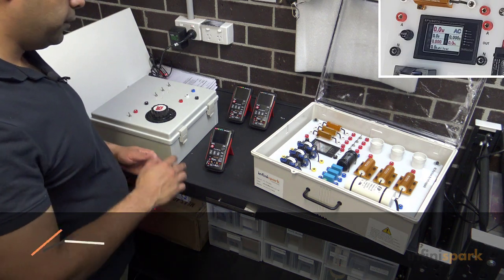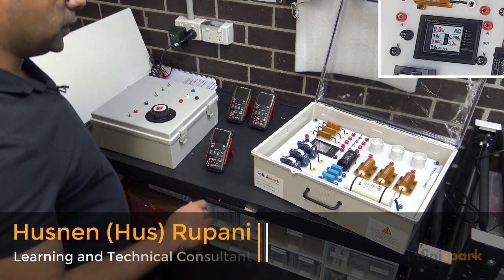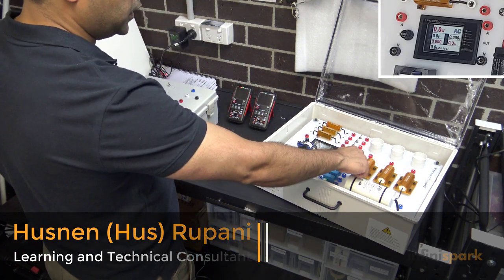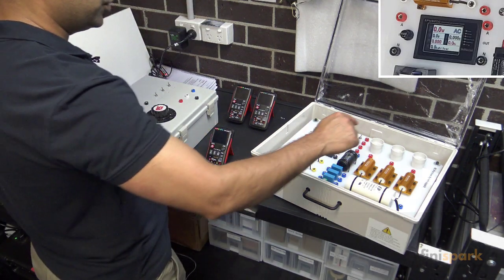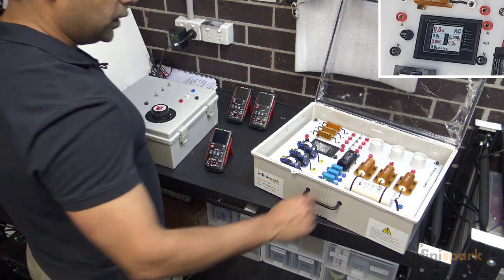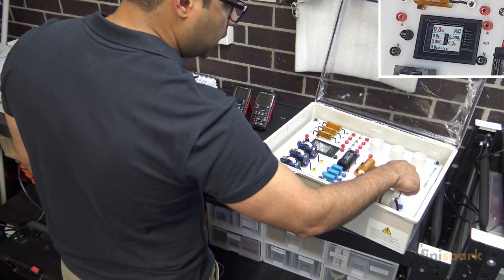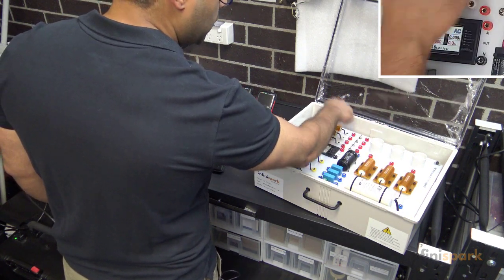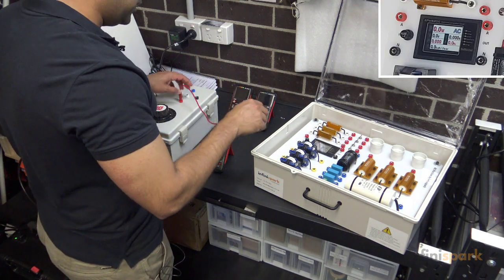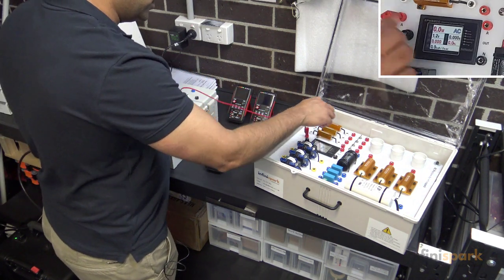We'll connect a three-phase star unbalanced circuit where we have line one powering this 33 ohm resistor, line two powering this 33 ohm resistor, and line three powering this 33 ohm resistor in parallel with this 20 ohm resistor. We'll start by connecting our line one to this meter.